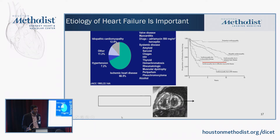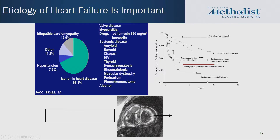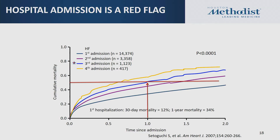A brief mention about the etiology of cardiomyopathies — especially restrictive and infiltrative types like amyloid and hemochromatosis — these have poor prognosis. You really have to consider these patients as stage C or D, even though they may not have the classic signs and symptoms of dilated cardiomyopathy.